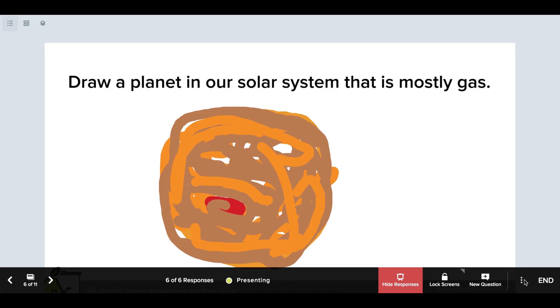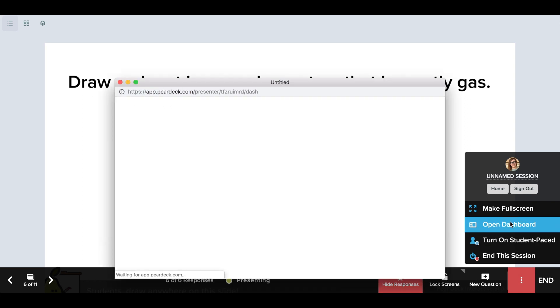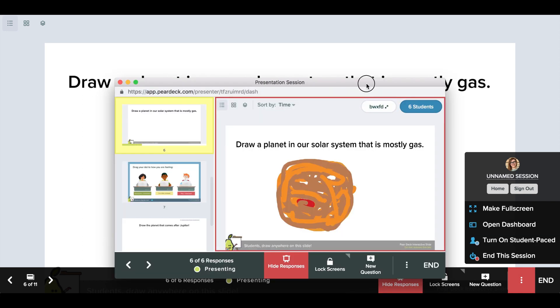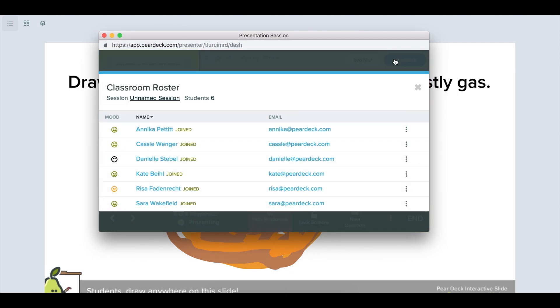To see who's joined your class and what each individual is saying, open your teacher dashboard. Click on student count to see the full roster of the connected students. You also have options to manage the roster from here.